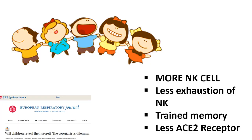Children are said to be protected mainly because they will be having more NK cells, less exhaustion of natural killer cells, trained memory, and less ACE2 receptors.